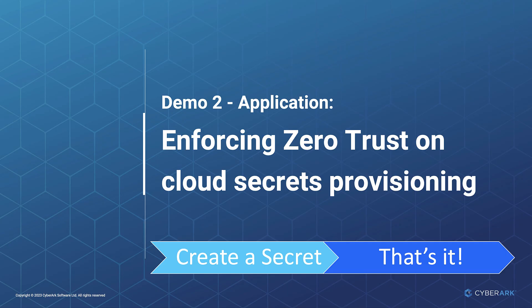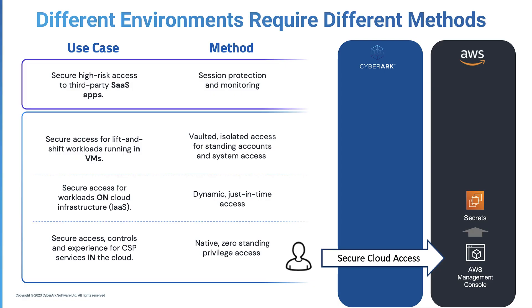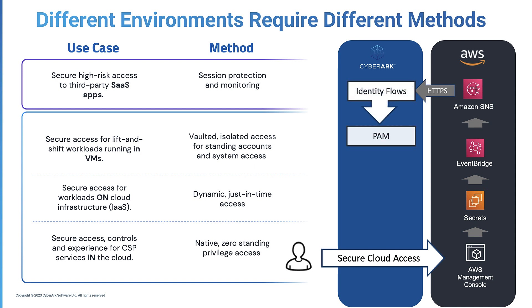We have examined how the CyberArk Identity Security Platform implements zero trust for human access to cloud workloads. What about application secrets? In the second demonstration, we will showcase how to secure secrets created directly on the Secrets Management feature from cloud service providers. The user creates a secret in AWS Secrets Manager directly using native zero standing privilege access to the AWS Management Console through secure cloud access from the CyberArk Identity Security Platform. With AWS EventBridge and SNS triggering the event, an automation workflow from Identity Flows is activated. Identity Flows then onboards the secrets to CyberArk PAM — Privileged Access Management. In conjunction with Secrets Hub, secrets can be managed in the cloud through a single pane of glass. All changes made to the secrets in PAM will be automatically synchronized back to AWS Secrets Manager, enabling the development team to secure applications and continue working natively in the cloud without impacting workflows.